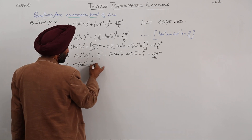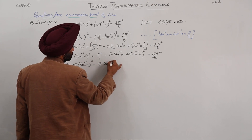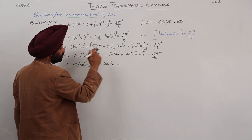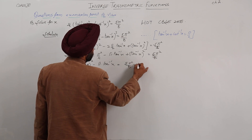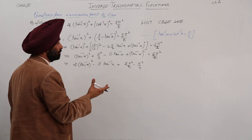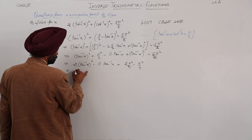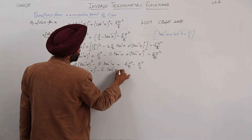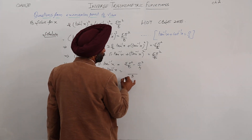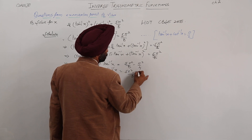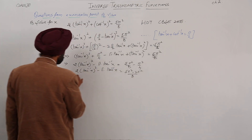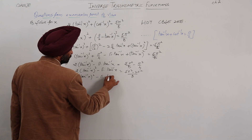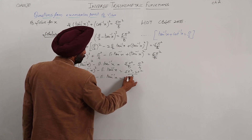So combining those two like terms, we write 2 tan inverse x whole square minus pi times tan inverse x equal to 5 pi square by 8 minus pi square by 4 — the pi square by 4 term has been taken to that side. With LCM 8, we get 5 pi square minus 2 pi square, so this part becomes 3 pi square by 8. Therefore: 2 tan inverse x whole square minus pi times tan inverse x equals 3 pi square by 8.